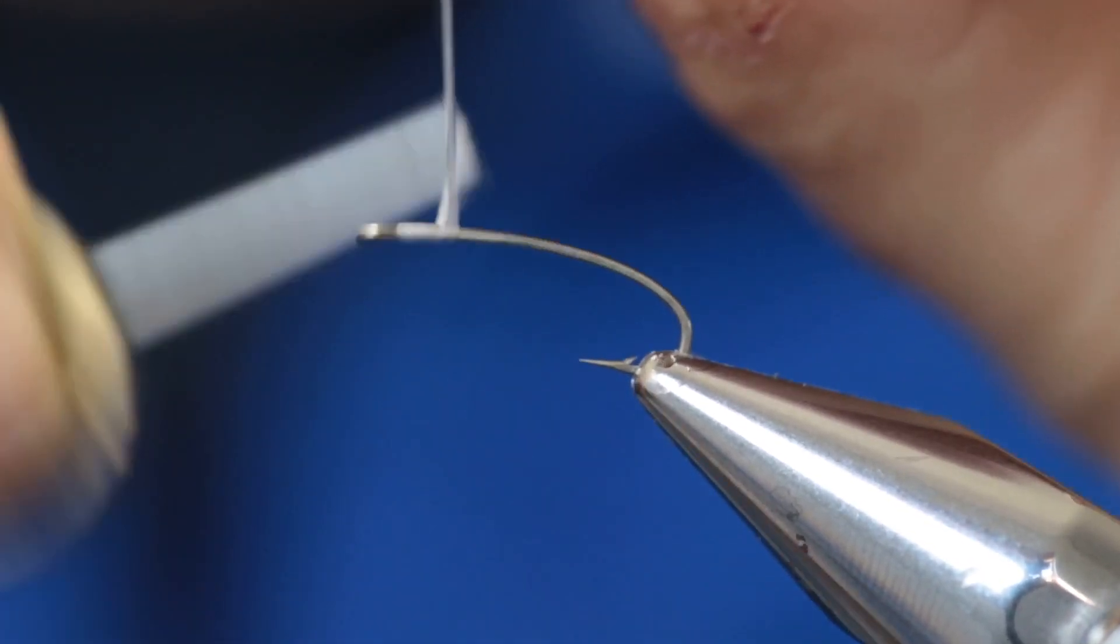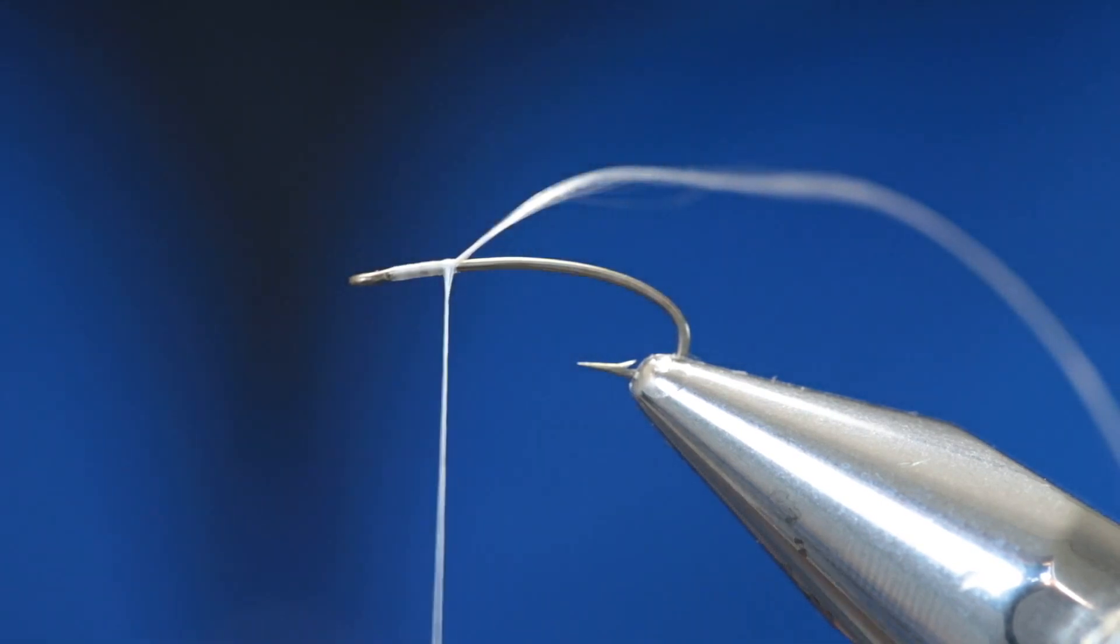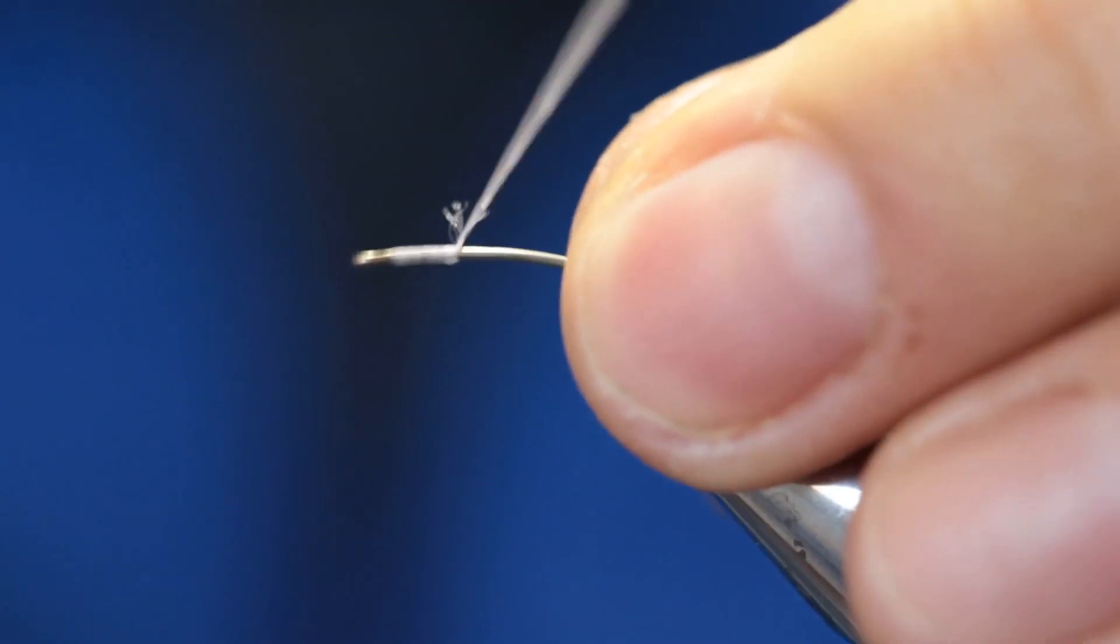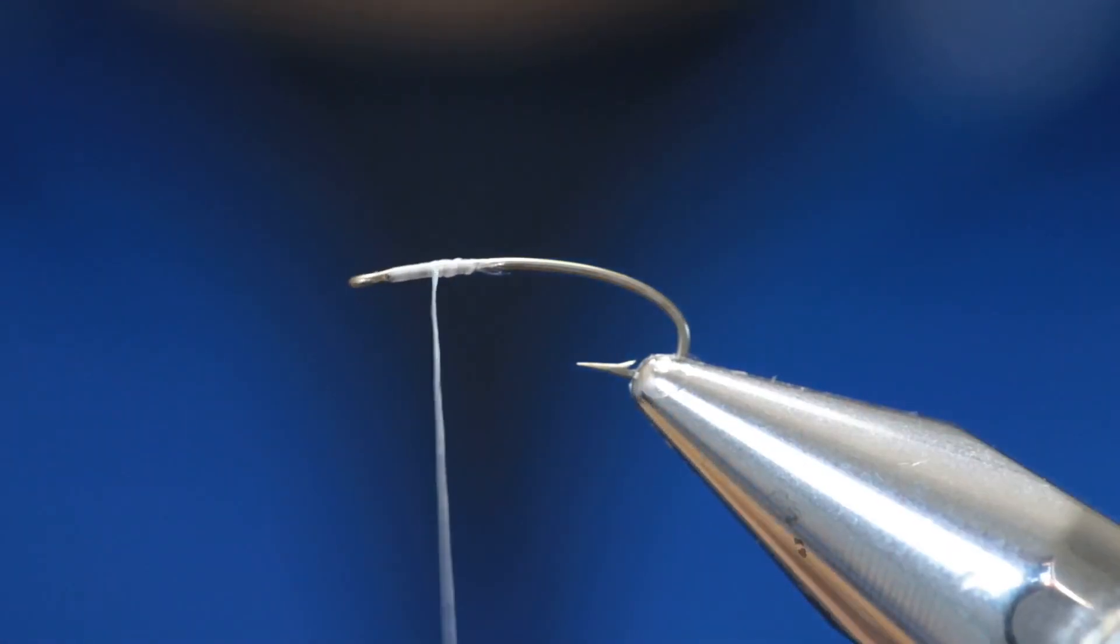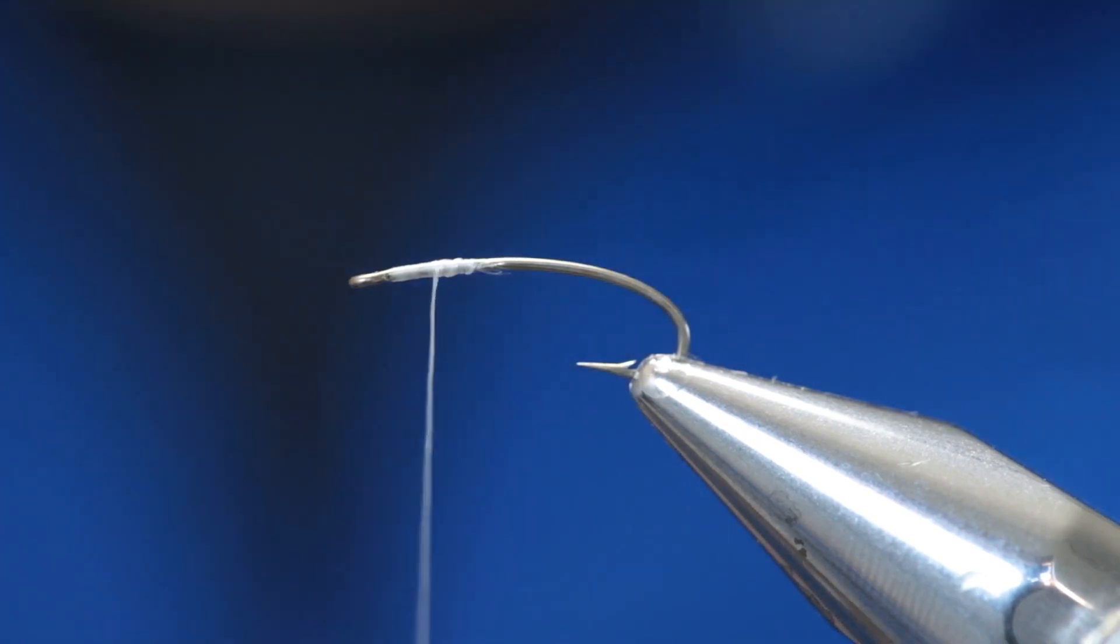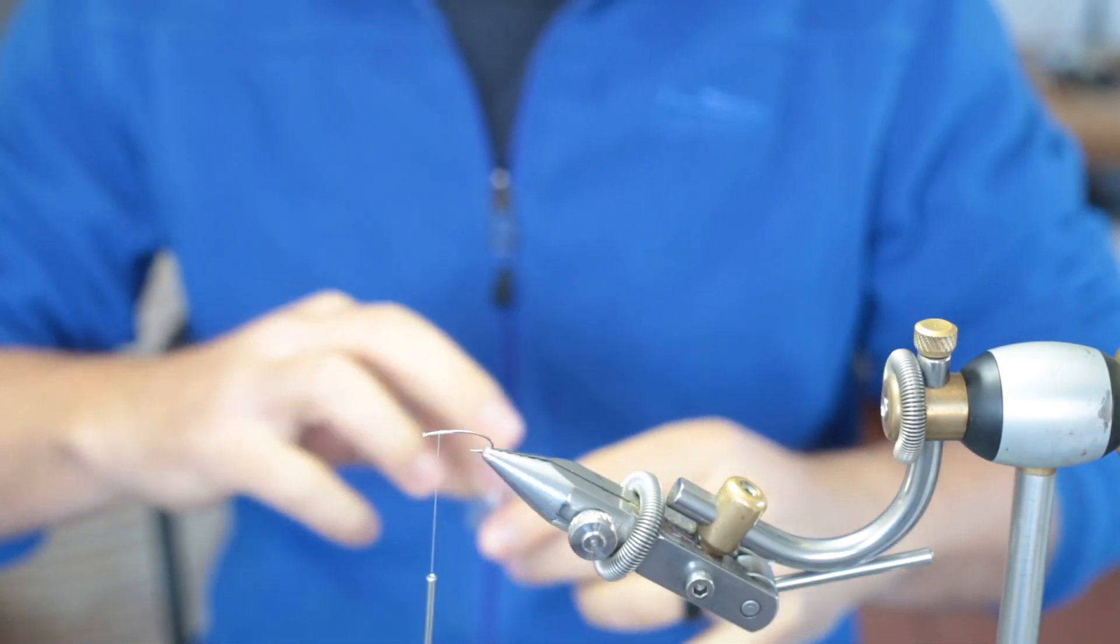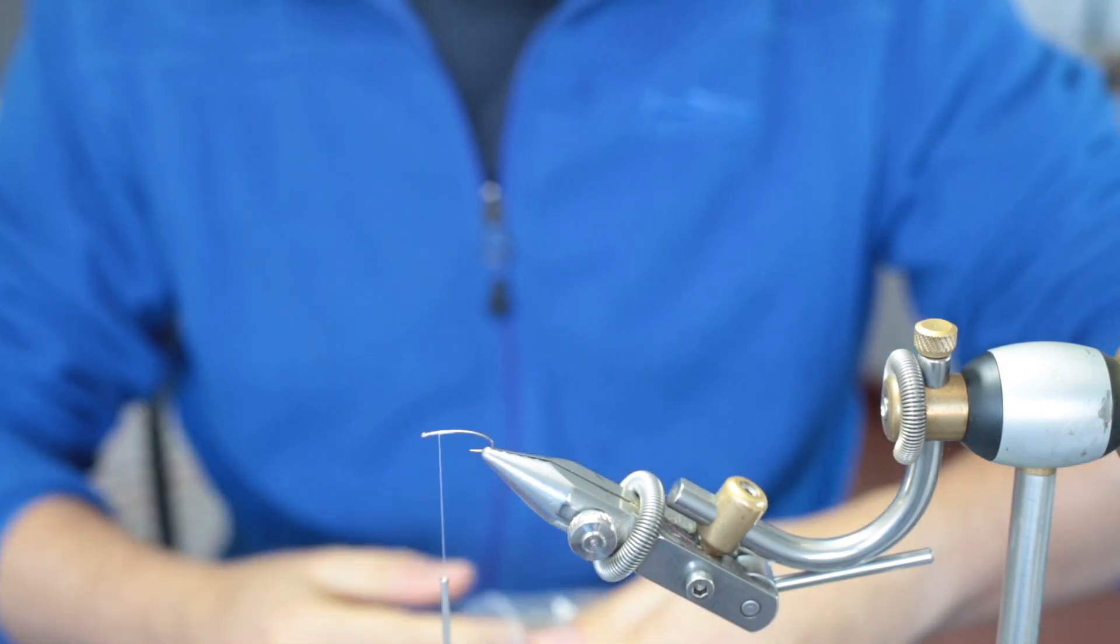And just secure it like so. Take your scissors and cut off the excess. That nano silk is really tough stuff so that's why this is a struggle a little bit. Take two or three fibers of peacock herl depending on the size of fly that you're tying. Just get some out.